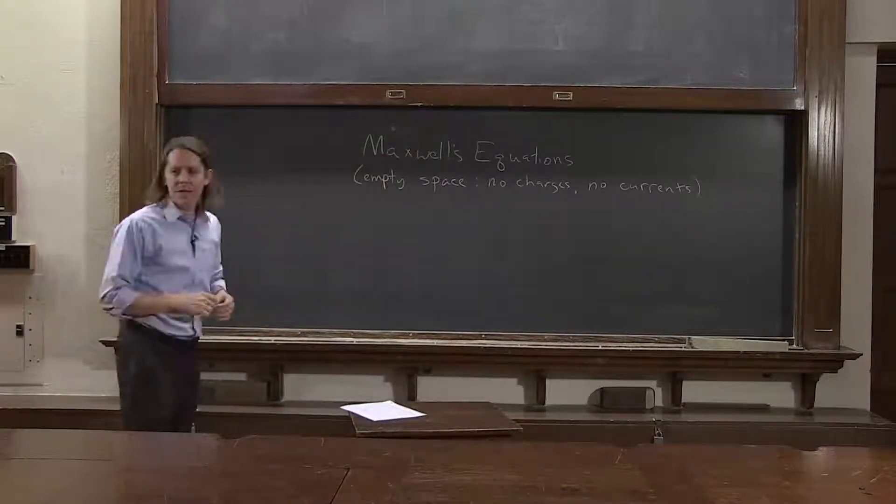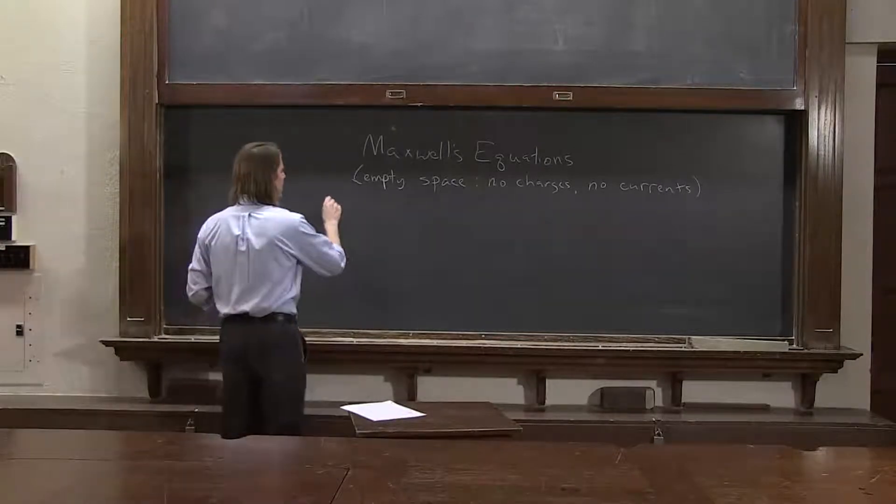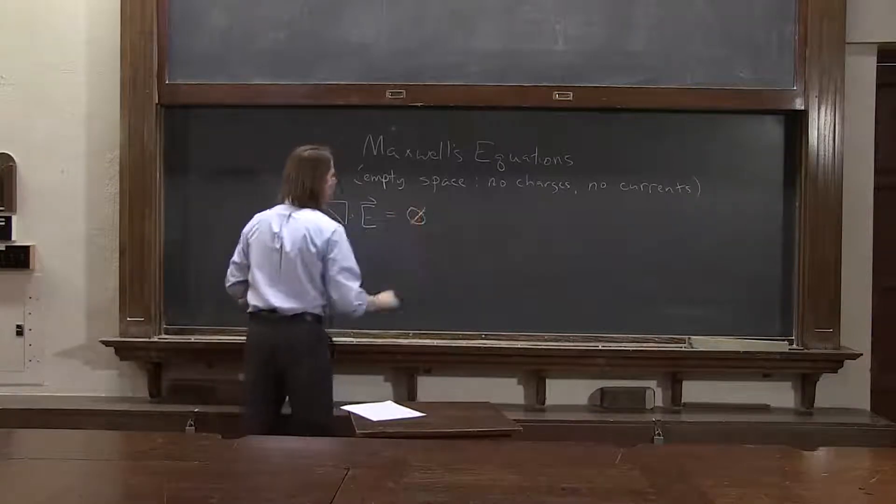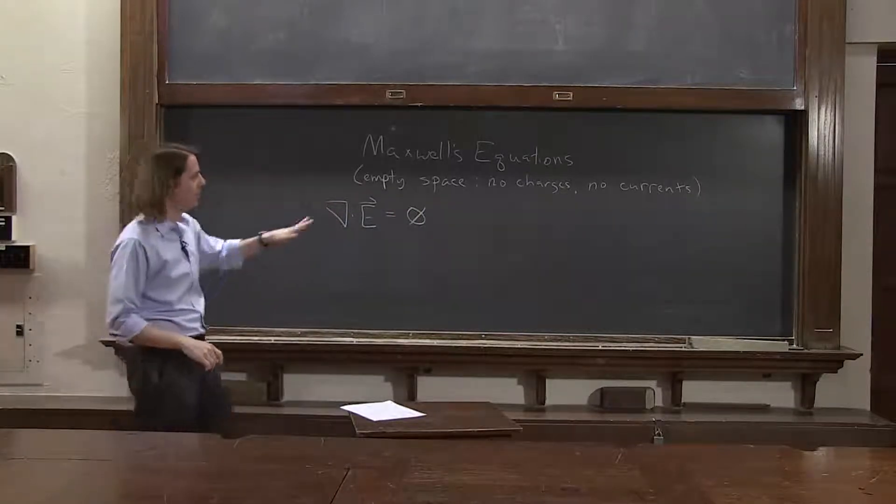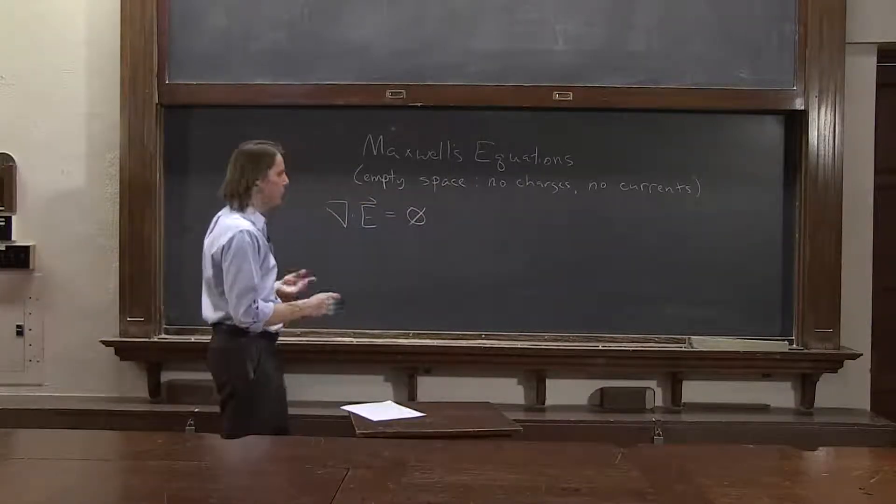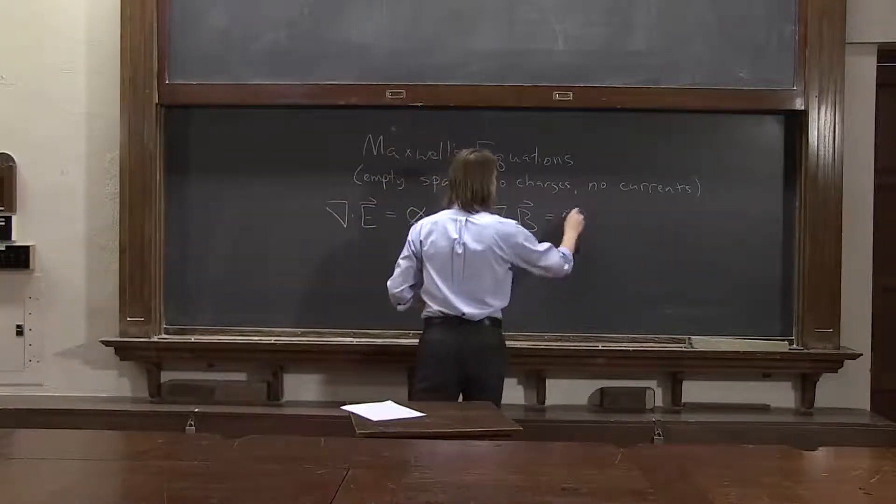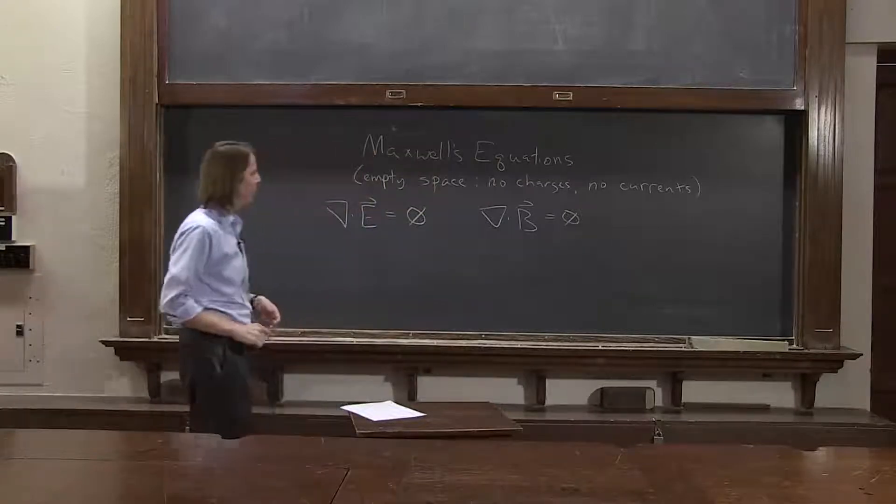So if we do that, then what do we have? Del dot E, in this case, equals zero. And you know it equals rho over epsilon naught. But I said no charges. So if that's zero, then no charges. And we have del dot B is always zero. So no one has found a monopole yet, despite what you might read.